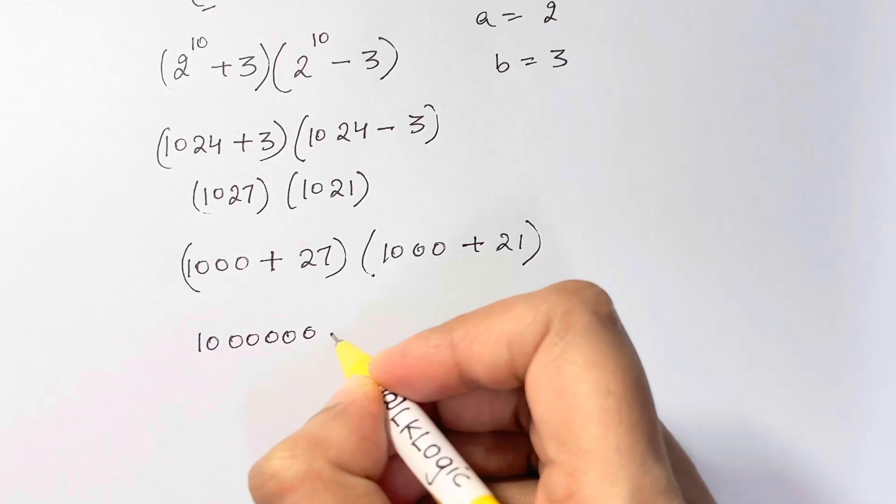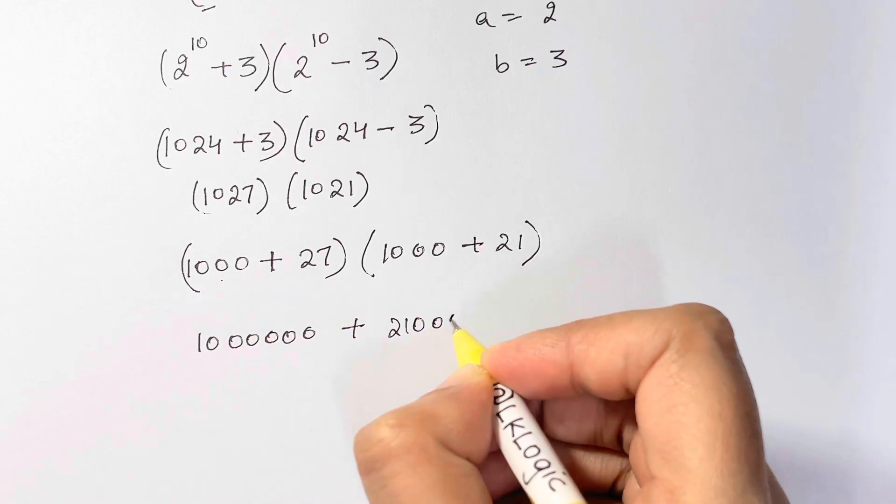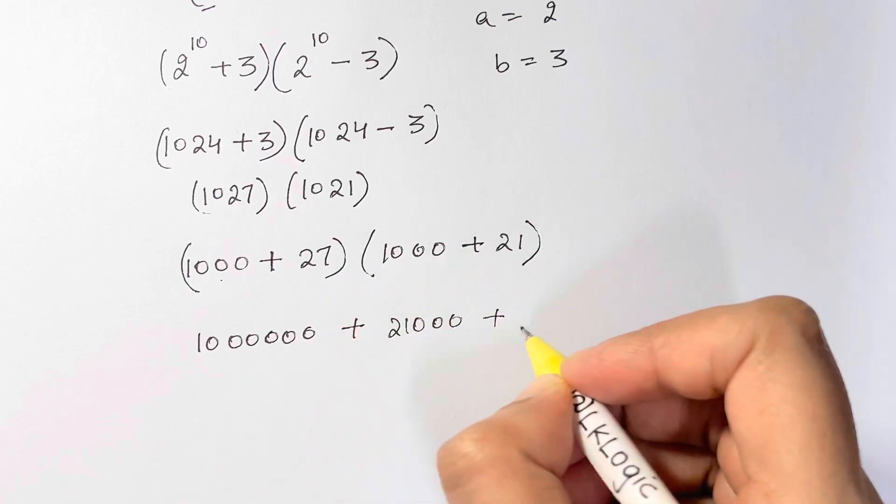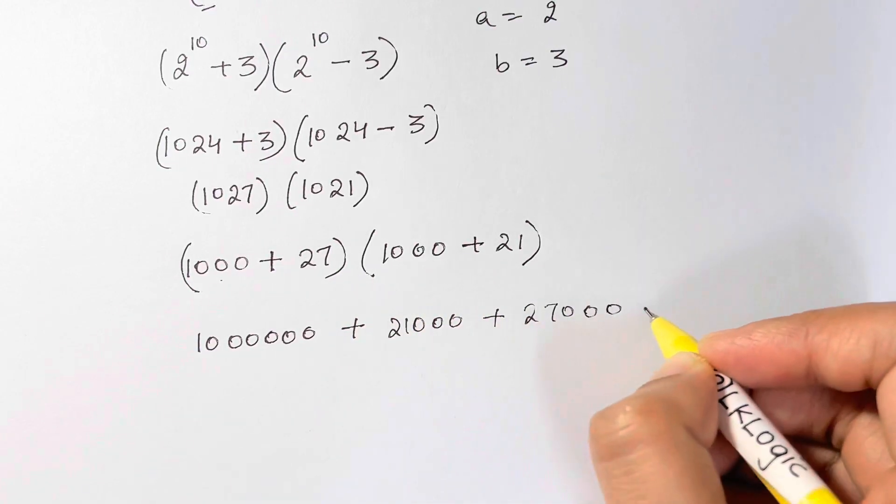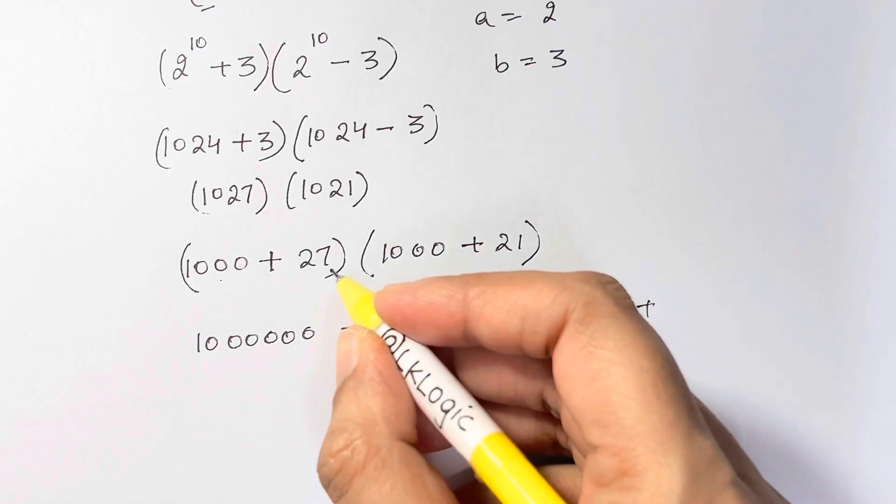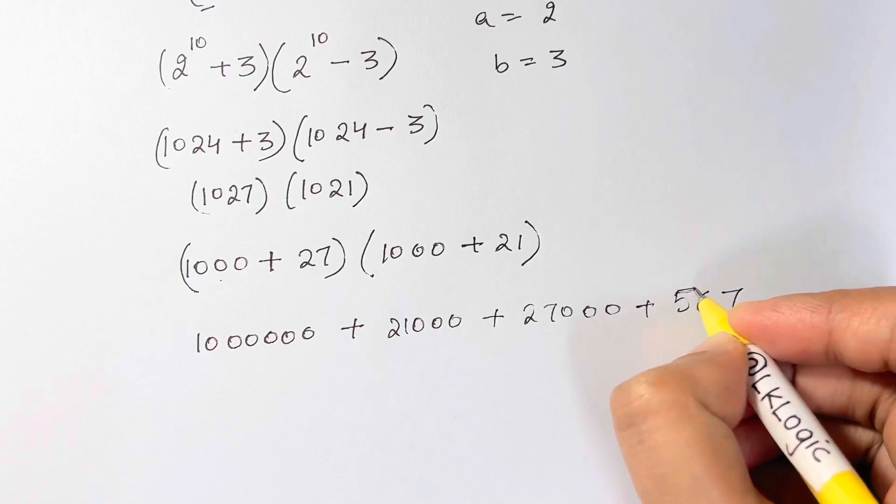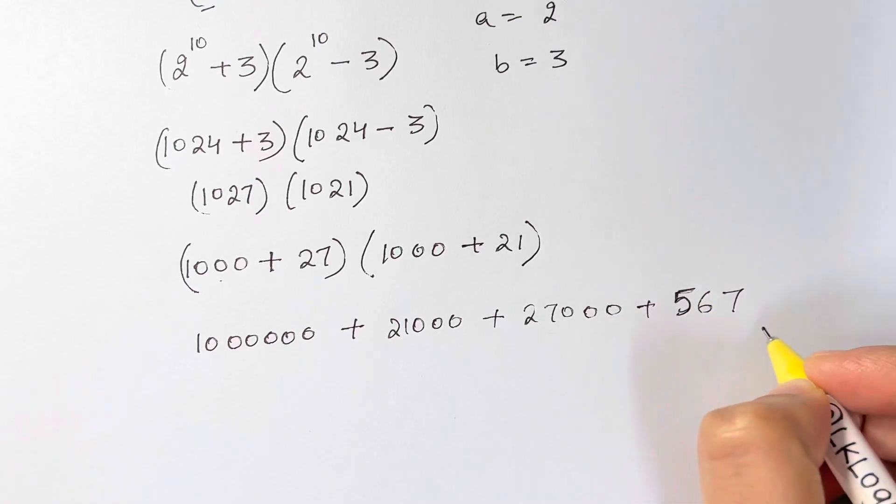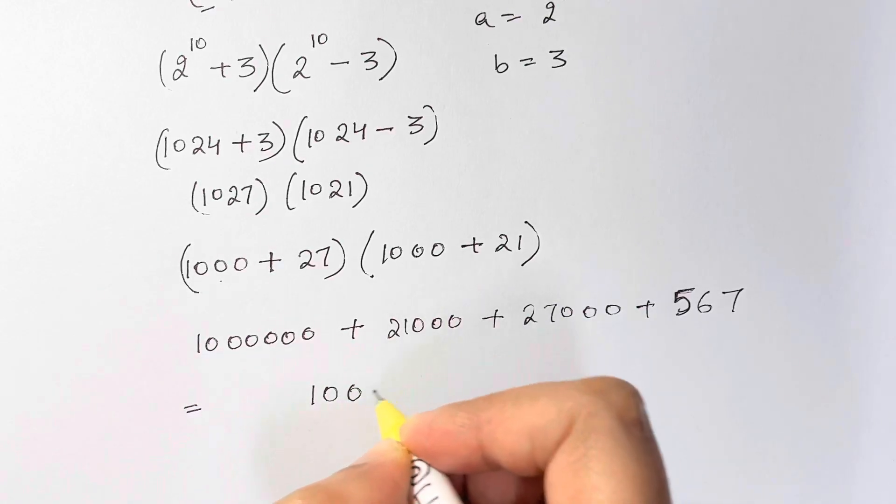Thousand times thousand equals million, so we have million here, plus thousand times 21 equals 21000, plus 27 times thousand equals 27000, plus 27 times 21 will give you 567.